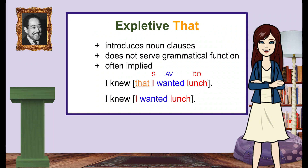Lastly, noun clauses can begin with the expletive 'that.' An expletive does not serve a grammatical function in the sentence — so even though it looks like a pronoun, it is not functioning as a noun, which is how you know it's an expletive. 'That I wanted lunch' is a dependent clause because it contains a subject-verb combination but cannot stand alone. The subject is 'I,' the verb is 'wanted,' and the direct object is 'lunch.' The word 'that' only serves to introduce the noun clause and make it dependent. As you learned with adjective clauses, if you see two subject-verb combinations next to each other not joined by a comma and coordinating conjunction or a semicolon, look for the implied expletive.